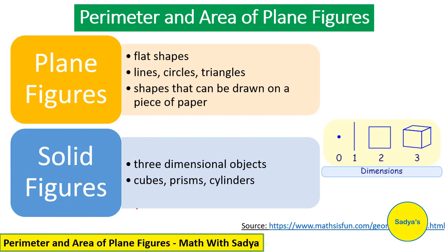The opposite of plane figures is solid figures. Solid figures are 3-dimensional objects — for example, cubes, prisms, or cylinders. The website mathisfun.com has a very good illustration explaining the dimensions. A point is 0-dimensional. A line is just length, with no width or height — it is 1-dimensional. A square has 2 dimensions: length and width. A cube has 3 dimensions: length, width, and height. So when we talk about area and perimeter of plane figures, we are talking about 2-dimensional shapes.